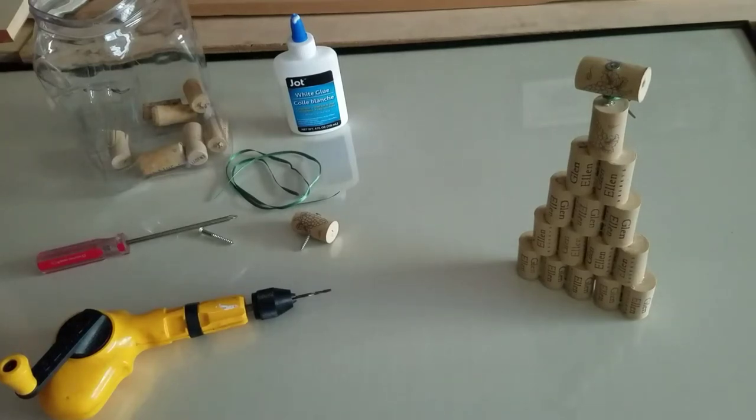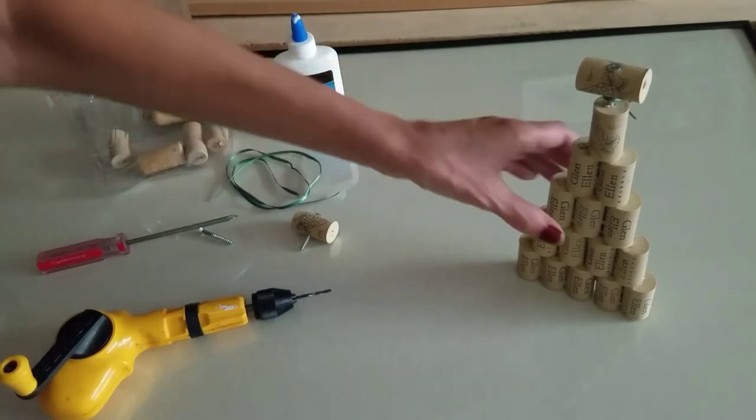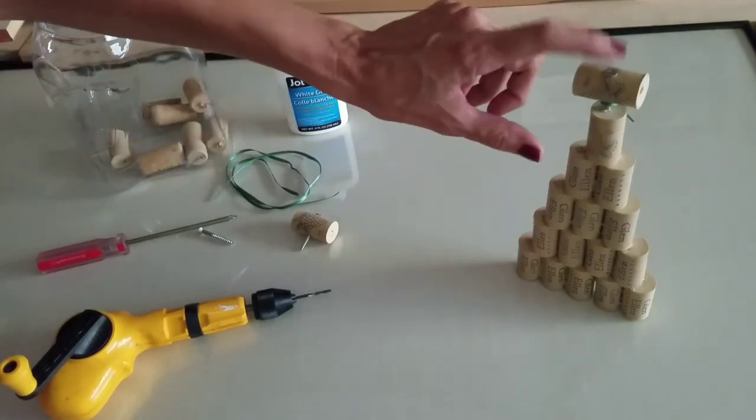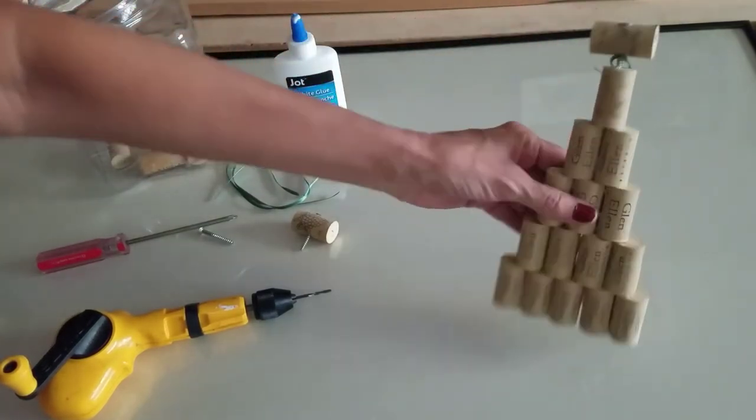So today I'm going to show you how to make a Christmas ornament made out of wine corks. I shaped it in the shape of a Christmas tree, and instead of a star on the top, I wanted to mimic a corkscrew.